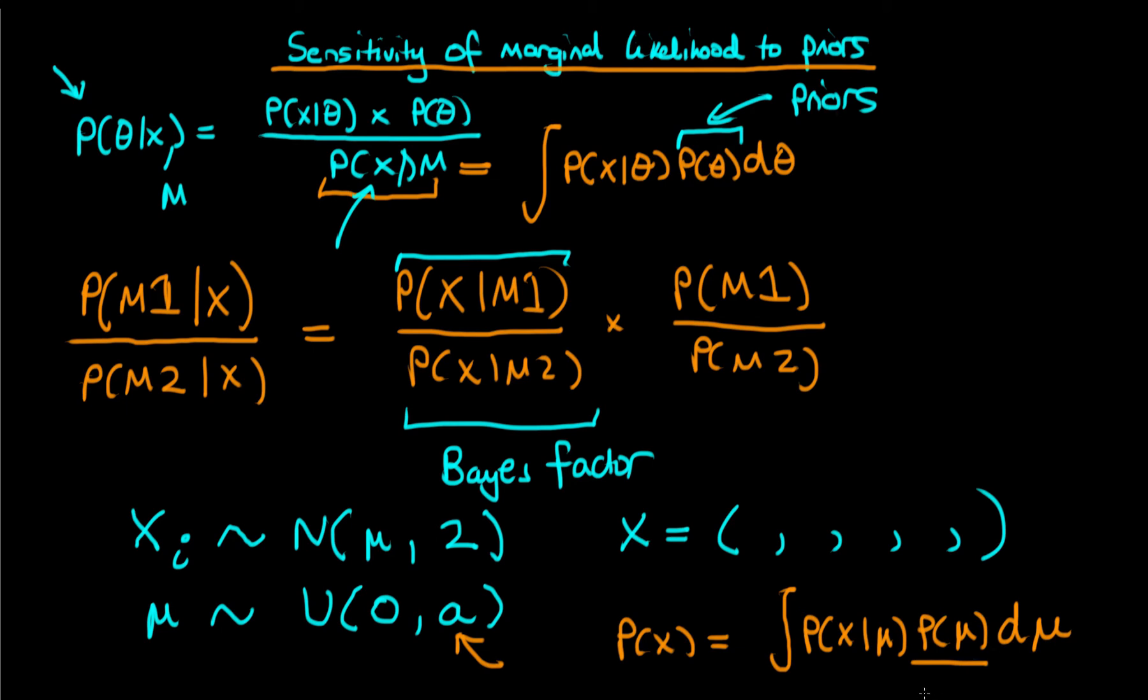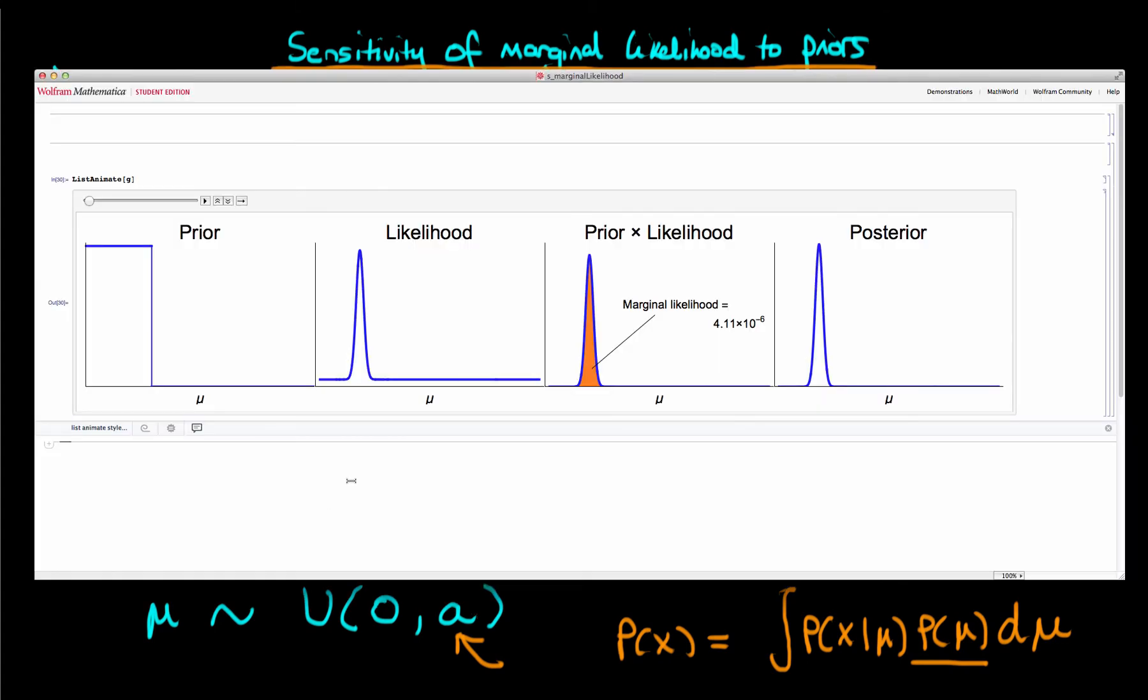So let me just say that again. The marginal likelihood is going to change significantly as we vary this parameter A, even though our posterior doesn't change at all. And something that I just want to disclaim here, I'm not really a big fan of these type of uniform priors, which have some sort of arbitrary cutoff, which I'm marking here by A. But in this example, it's useful to use such a prior.